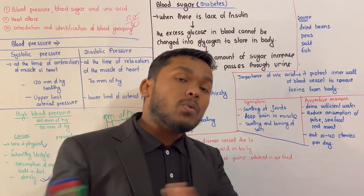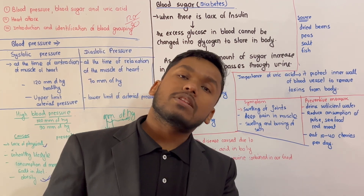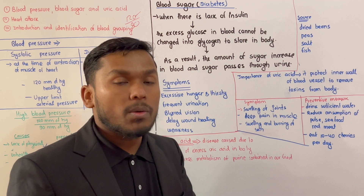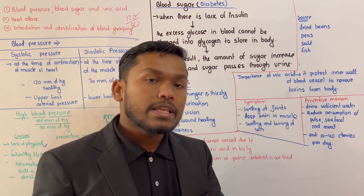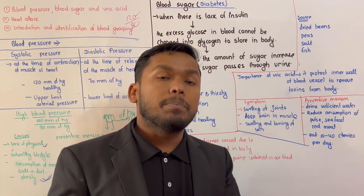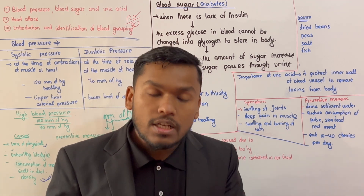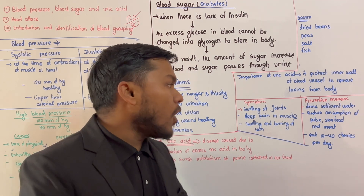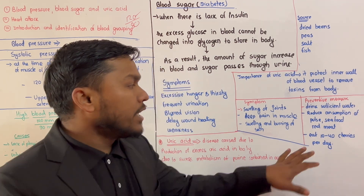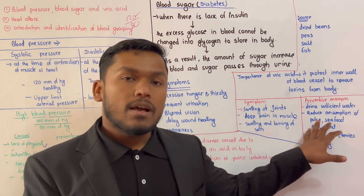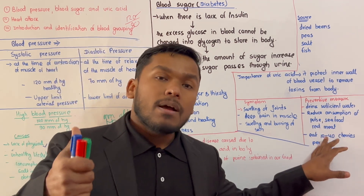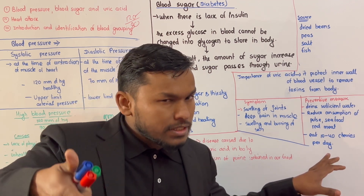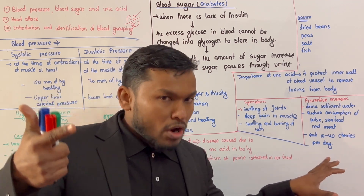To manage gout, we should drink sufficient amounts of water to wash out purines. We should metabolize and break down purines properly by cutting out purine-rich foods such as dry beans. Reducing consumption of red meat and wine can also help manage gout.